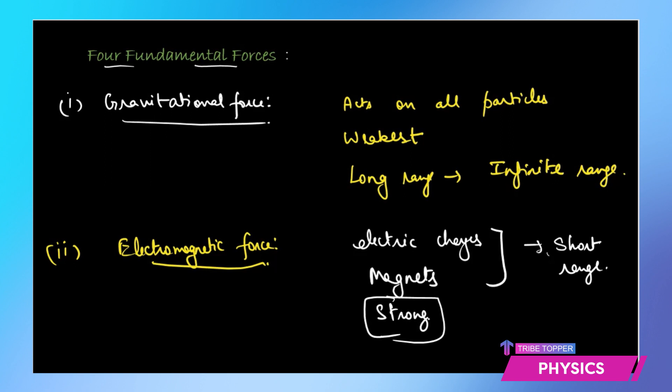But unlike gravitation, which is only an attractive force, electromagnetic forces can be attractive as well as repulsive. Like charges repel each other and opposite charges attract each other. Similarly, in magnets, like poles repel and opposite poles attract. These are strong forces, stronger than the gravitational force.